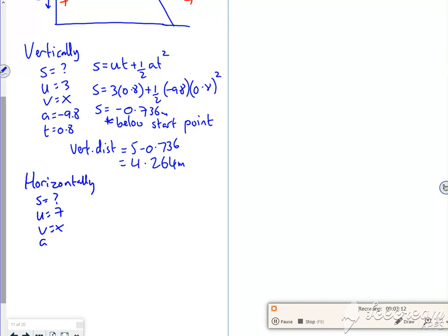v not fussed about, a is 0, t is now 0.8. So s equals ut plus a half a t squared. Remember a equals 0 gets rid of it. You could use x instead of s if you wanted to. But it's 7 lots of 0.8.